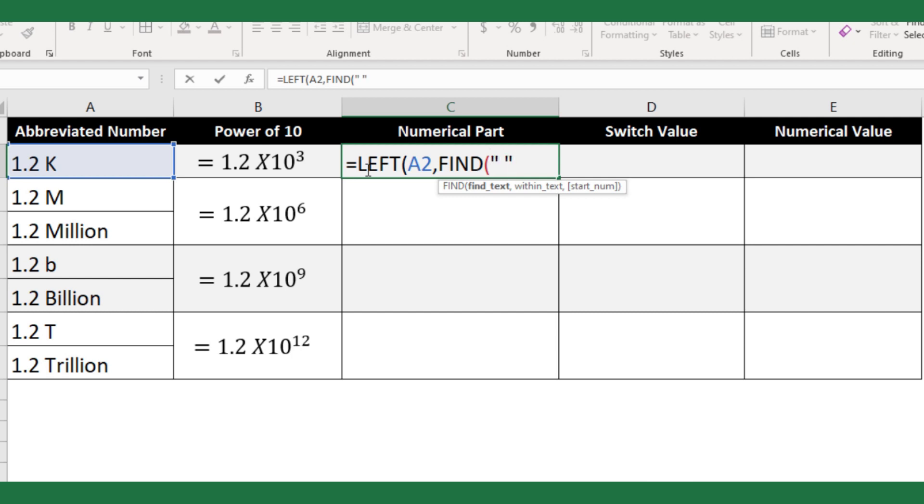For this, just use double quotes with a space. Next, within text argument is the same cell A2, and the start num argument is one, because I need the number to be extracted from the first digit. Now close the brackets and hit enter.